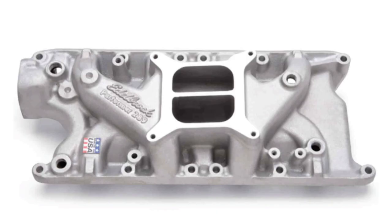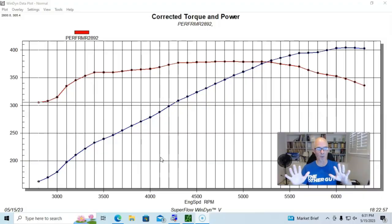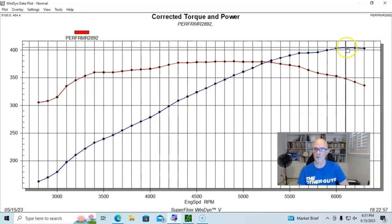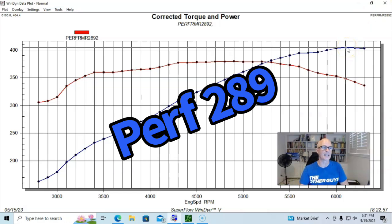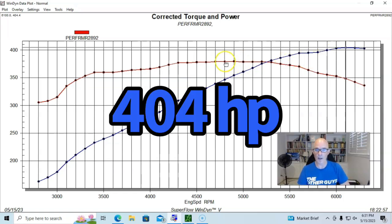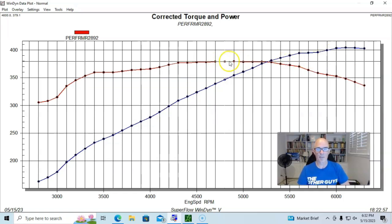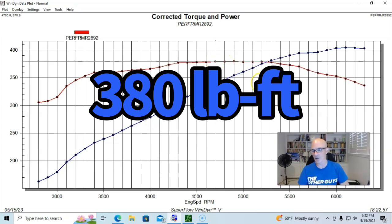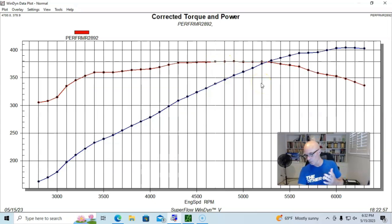Here's our starting point. What we did was we first equipped the motor with a dual plane Performer 289. It's kind of low man on the totem pole, the mildest version of a dual plane intake manifold. But still it did very well, and we dialed in our carburetor. Running with the Performer 289 intake manifold, our modified 302, or actually a little bit over 307 cubic inches, produced 404 horsepower and peak torque was up at 379 foot pounds.